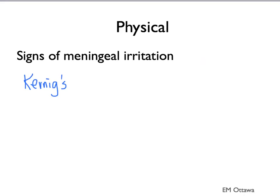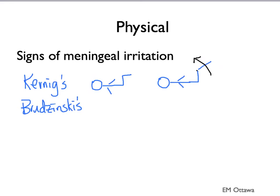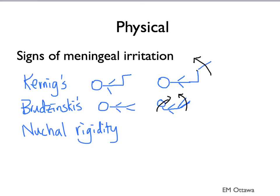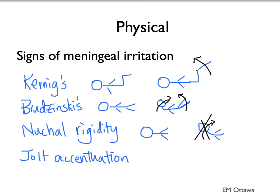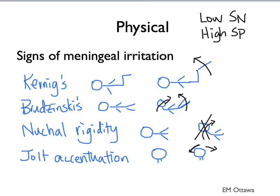There are a few signs of meningeal irritation. The first one is Kernig's sign — this is when the patient's knee and hip are bent at 90 degrees, and extension of the knee is painful. All of these tests for meningeal irritation have low sensitivity and high specificity. That means if your patient has it, it is much more likely they have meningitis. But if they do not have it, it does not mean they don't have the disease.